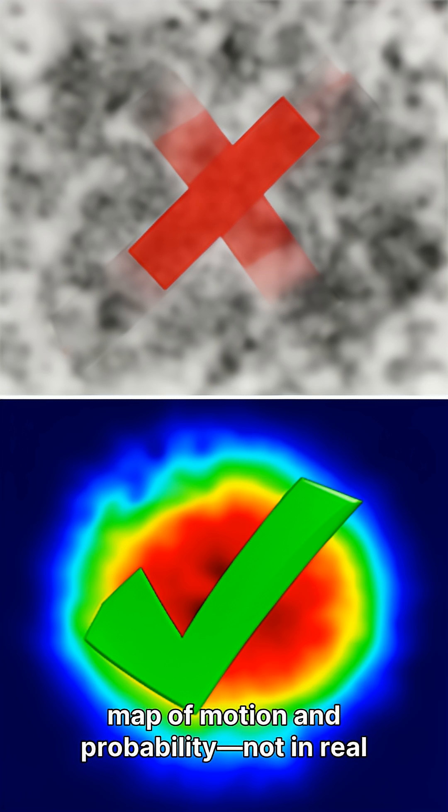And this is the part headlines mess up. That shape lives in momentum space, a map of motion and probability, not in real space, like a microscope image.